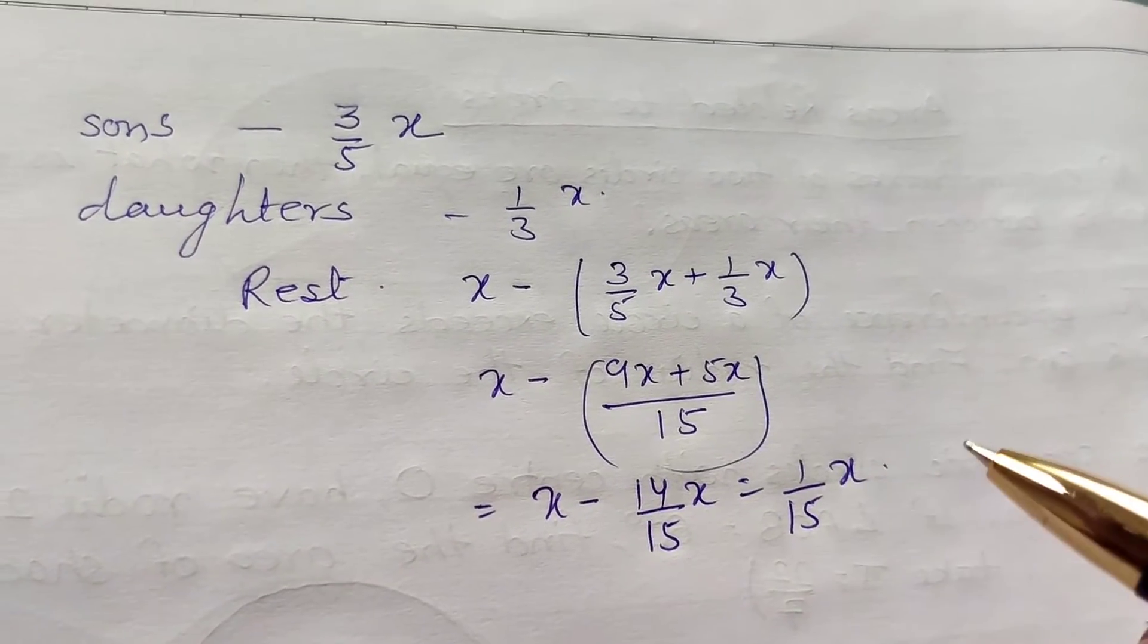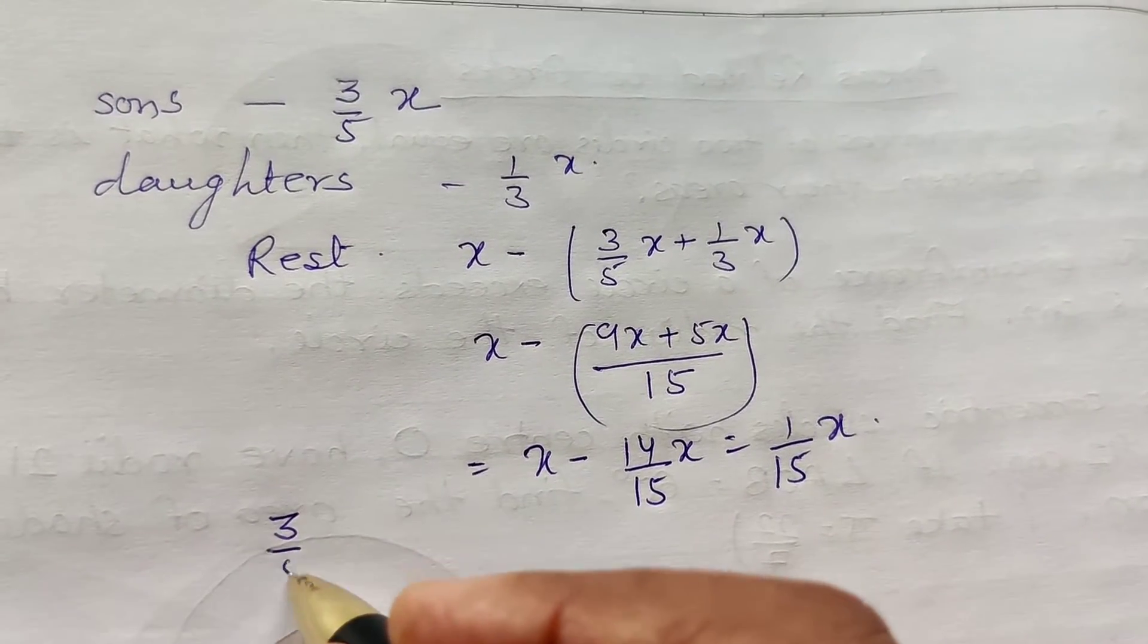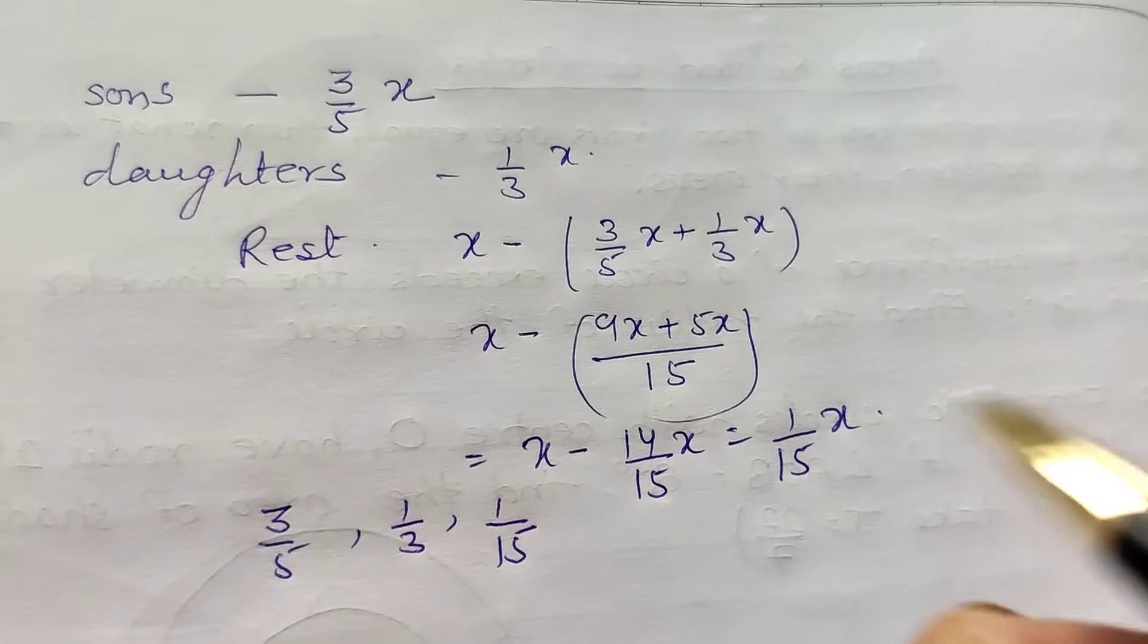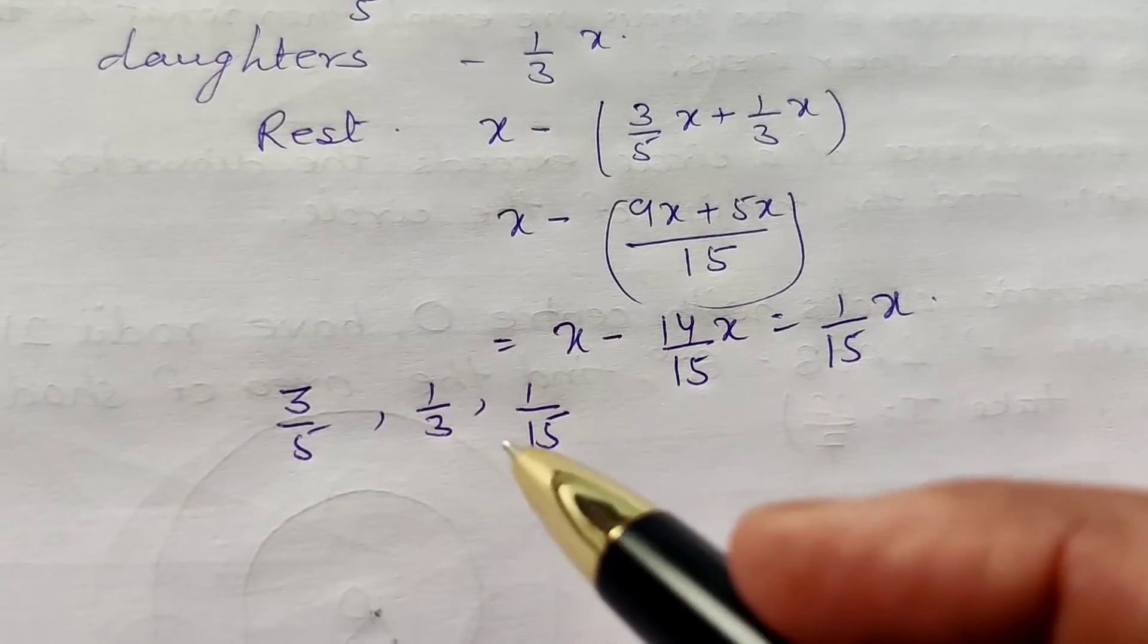It is equal to X minus 14/15X equals 1/15X. So which portion is more? 3/5, 1/3, and 1/15. Now compare these components.